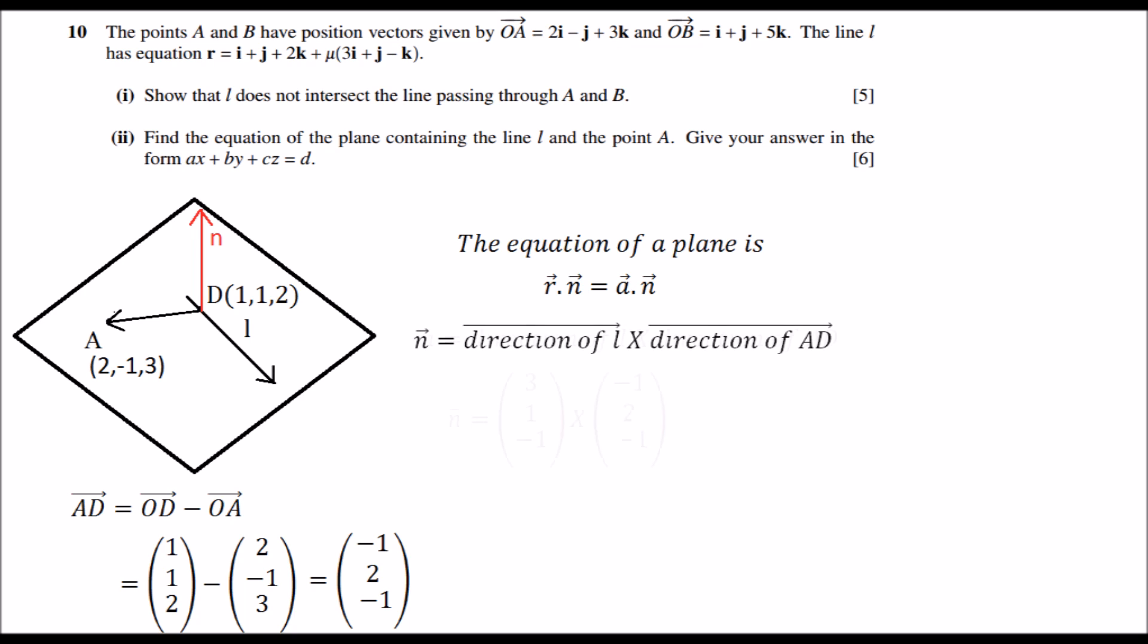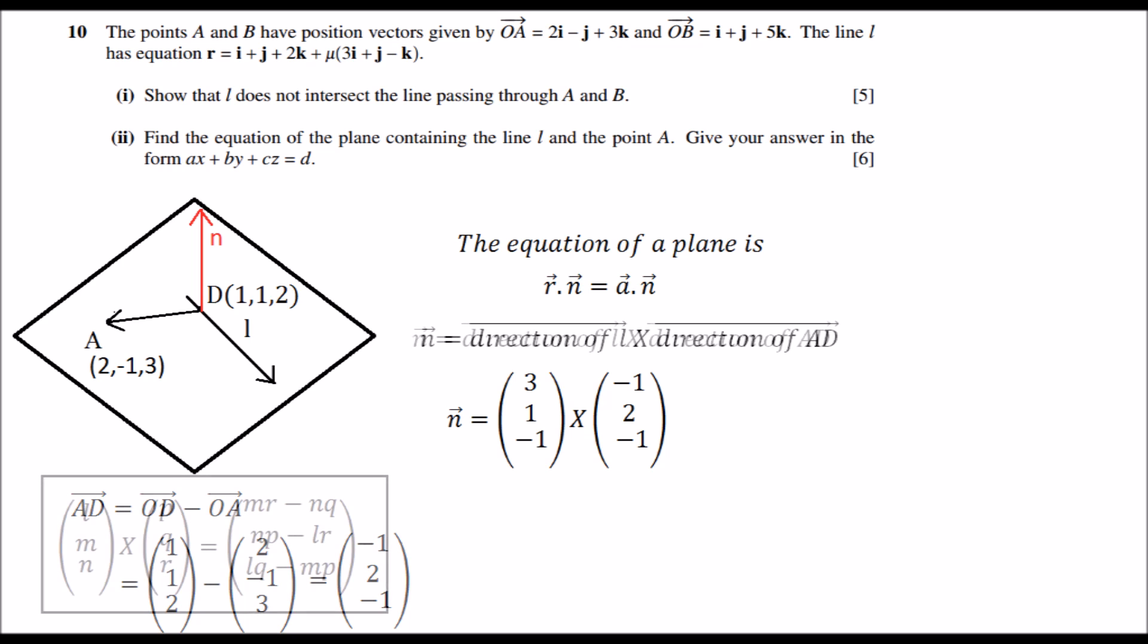Let's substitute in our values. L is (3, 1, -1), it's given in the question, and AD we just found out. Now the formula for cross product is given here: the vector (L, M, N) cross the vector (P, Q, R) gives (MR - NQ, NP - LR, LQ - MP). Pause the screen for some time and use this formula to find the value of n.